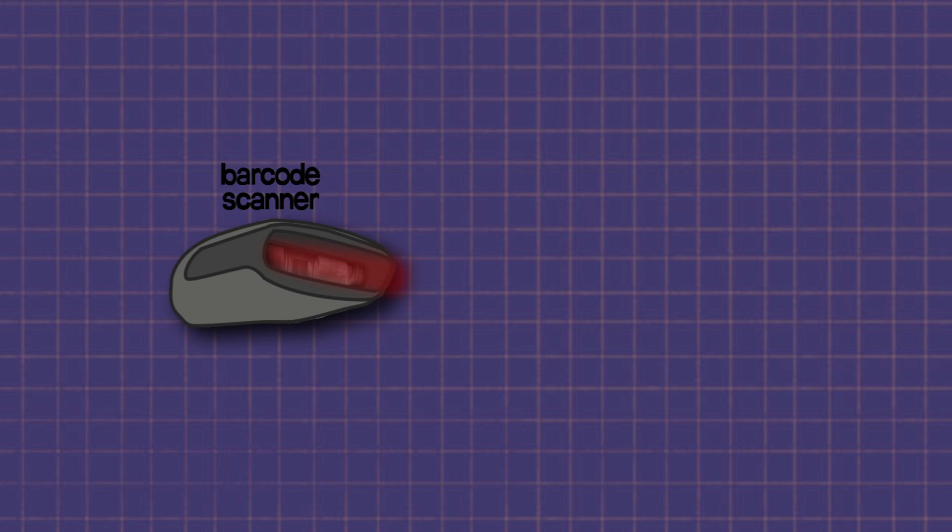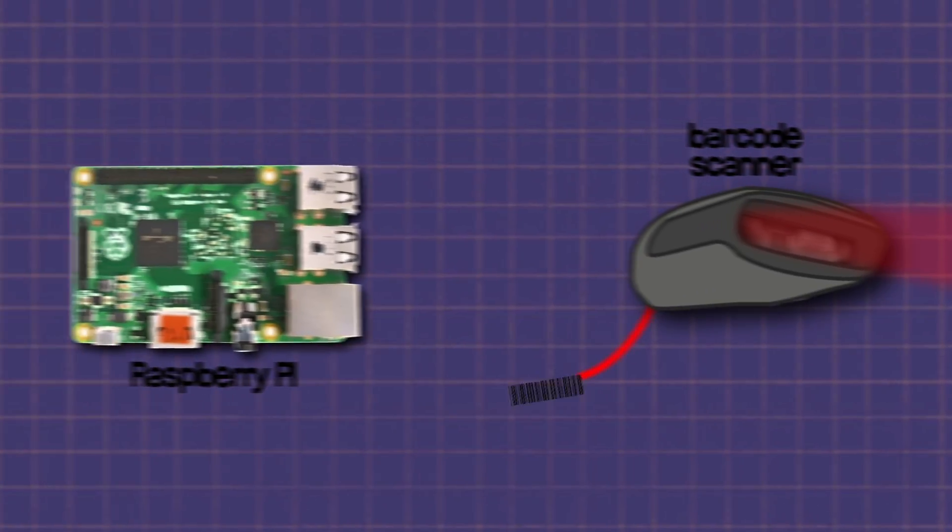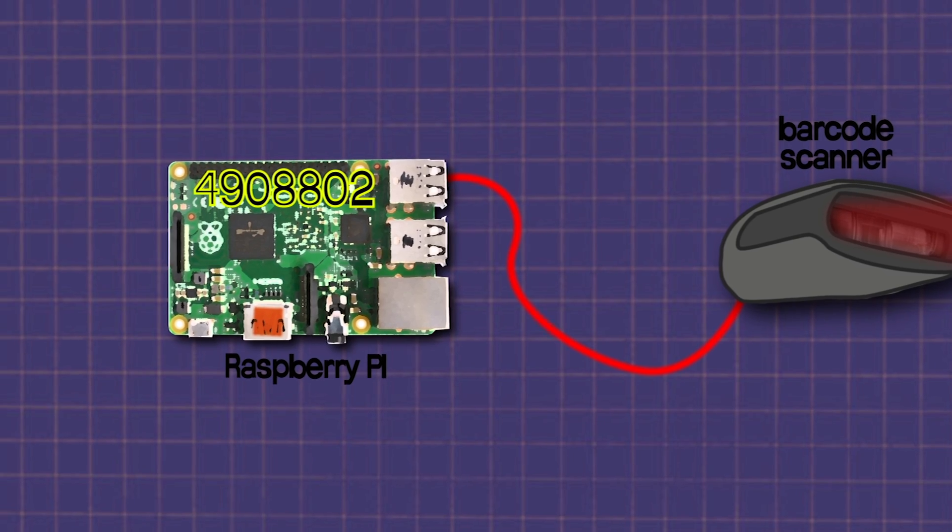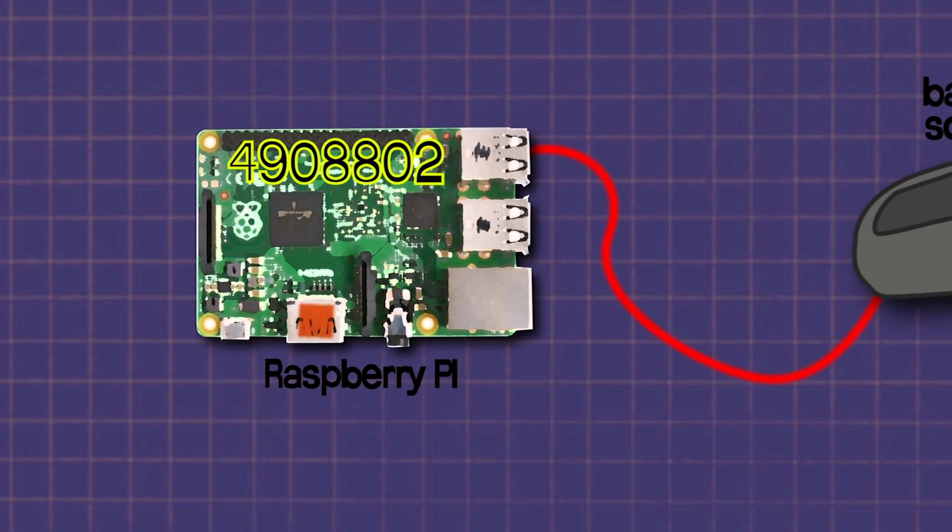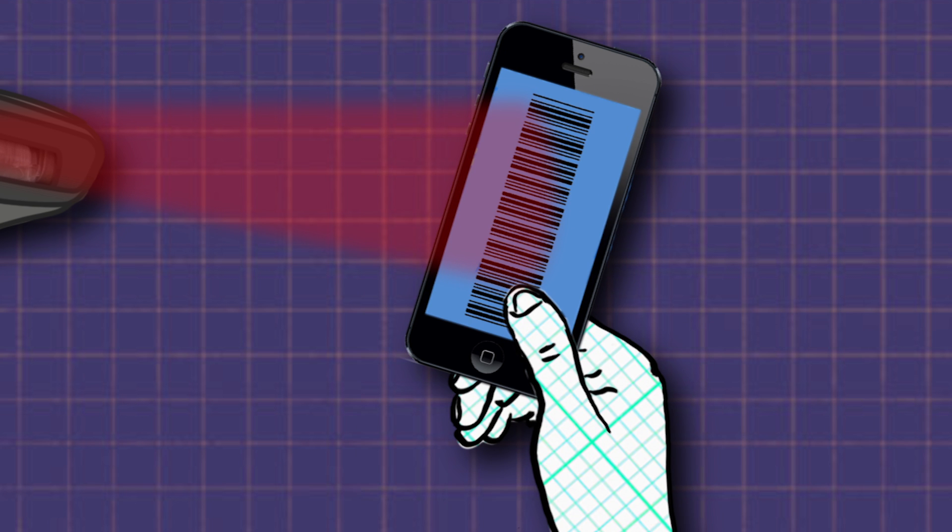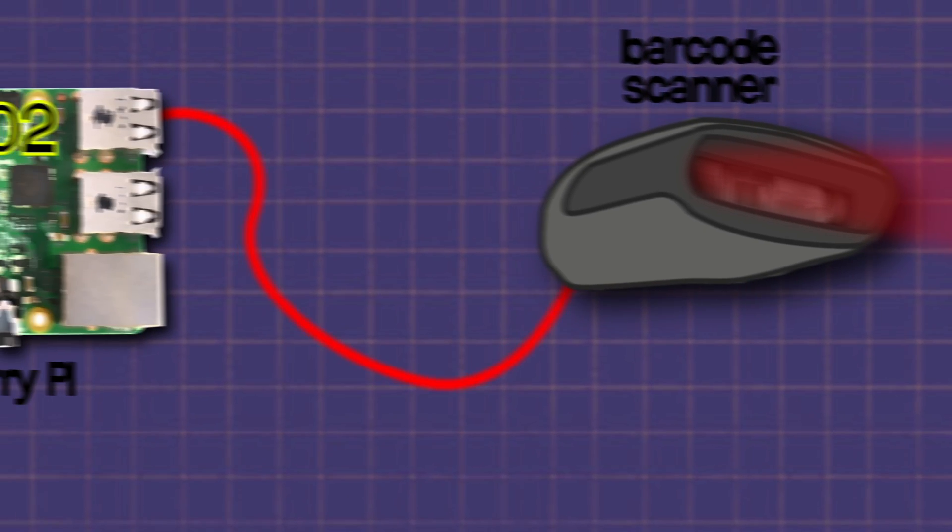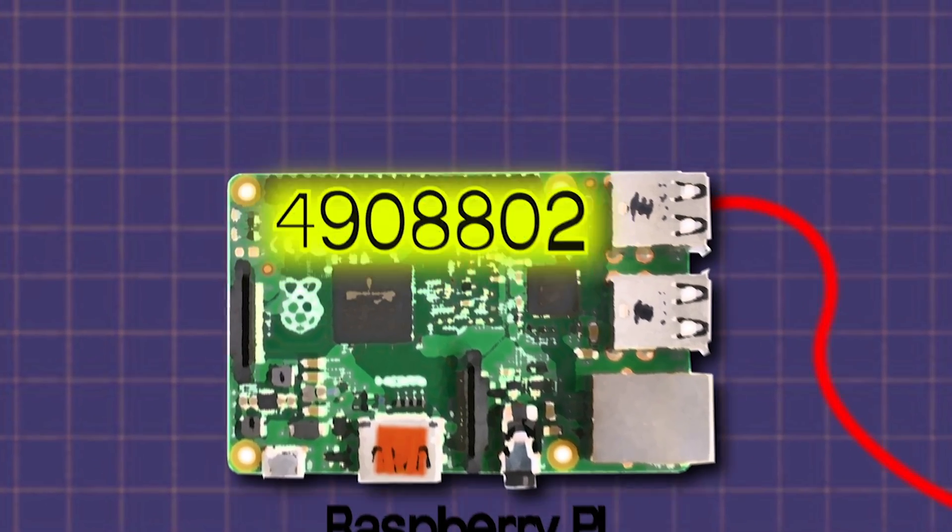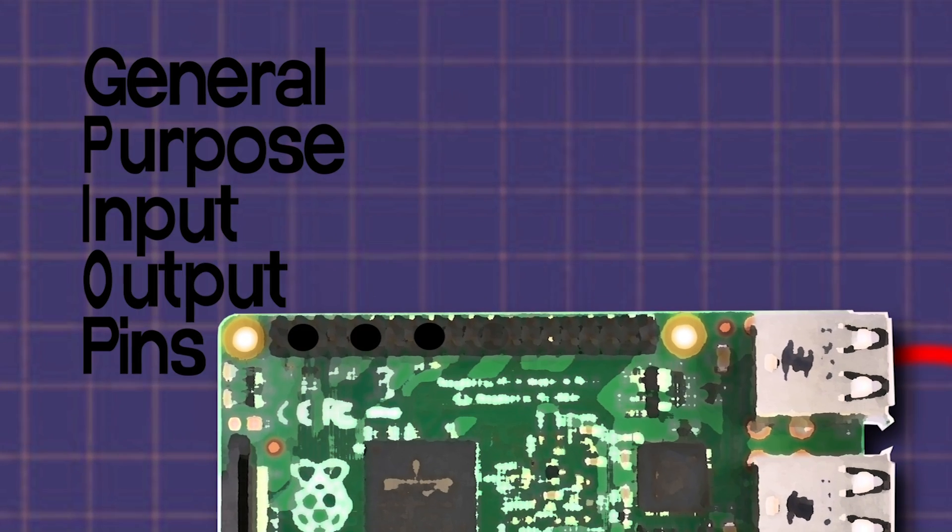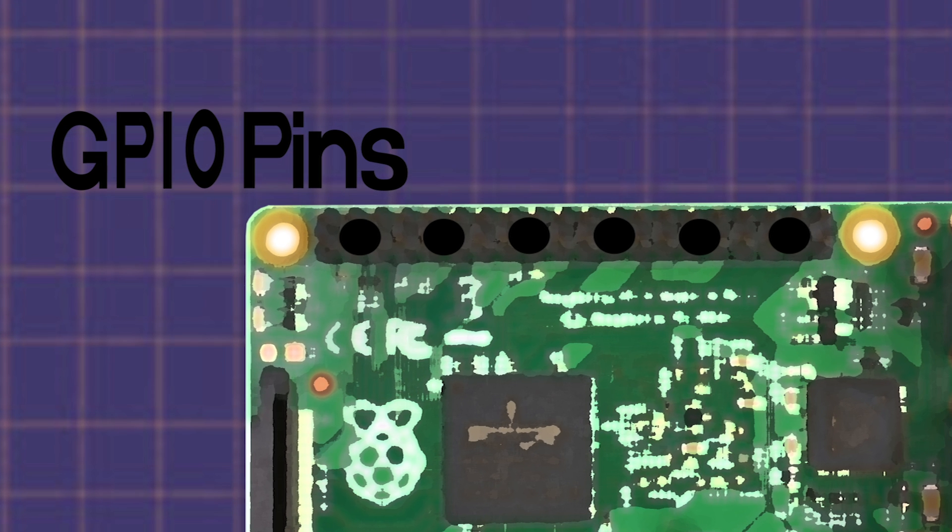A barcode scanner uses laser light to read a pattern of lines which are translated into numbers by the computer. Those numbers would replace a lock combination, so you can have a card with your barcode on it or you could hold up your smartphone with the barcode on the screen. When the Raspberry Pi detects the correct barcode from the scanner, it sends a signal to the general purpose input-output pins, also known as the GPIO pins.